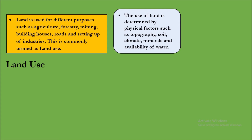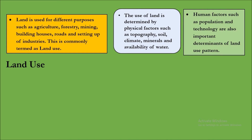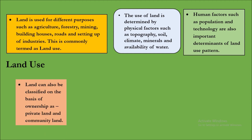Human factors such as population and technology are also important determinants of land use pattern. Land can be classified on the basis of ownership into two groups: private land and community land.